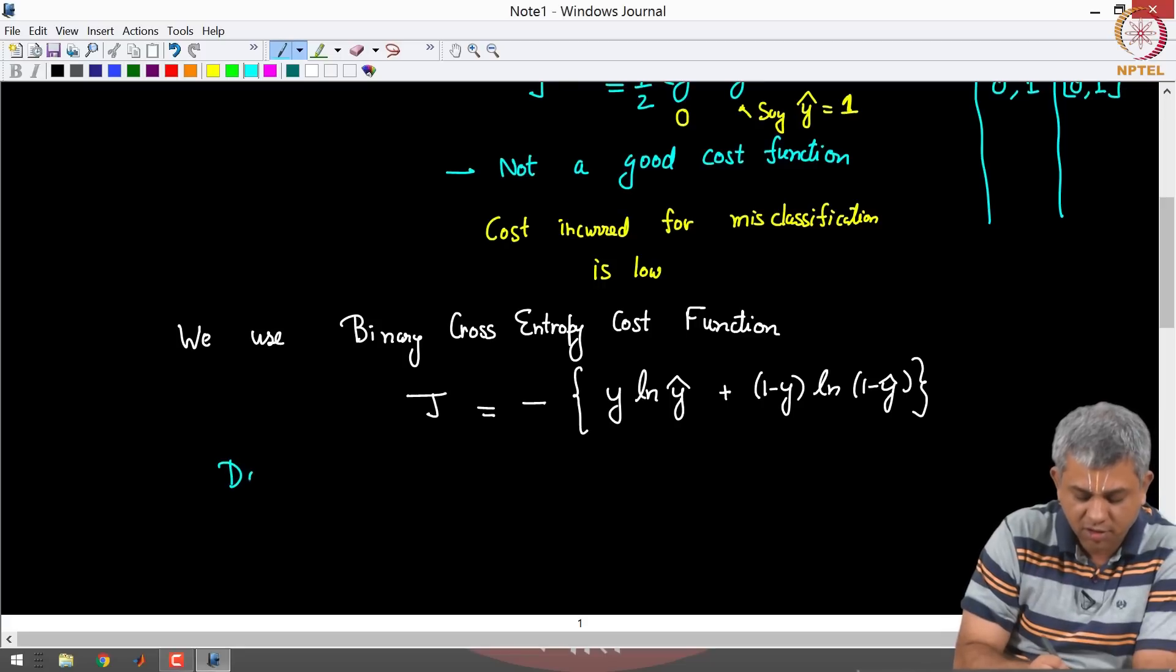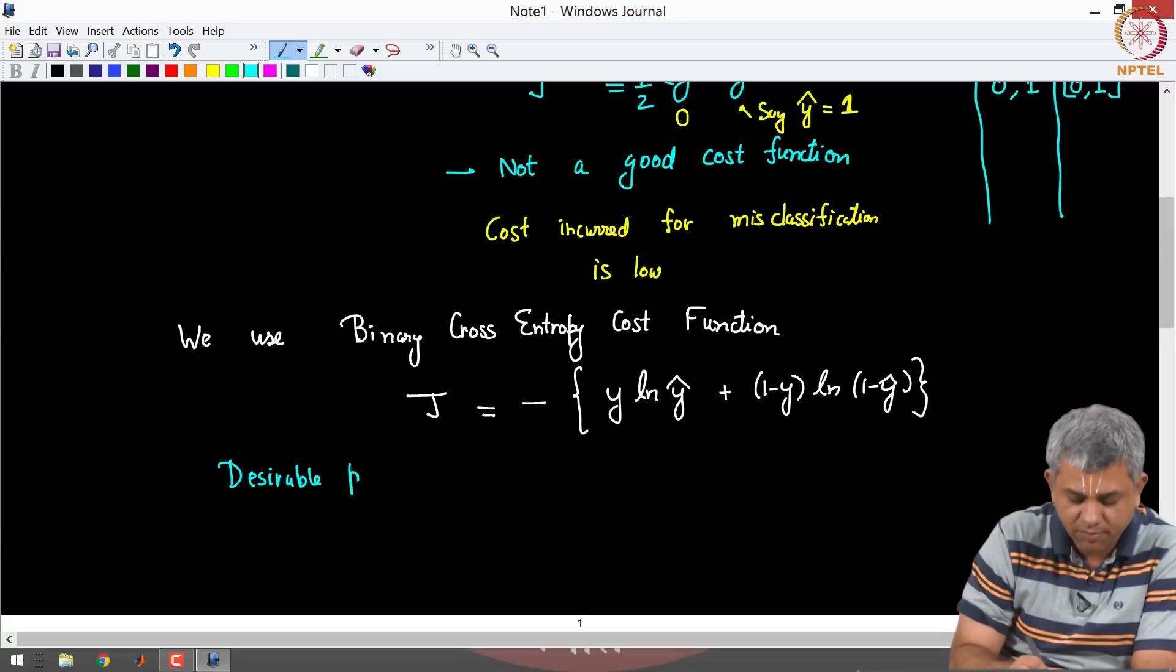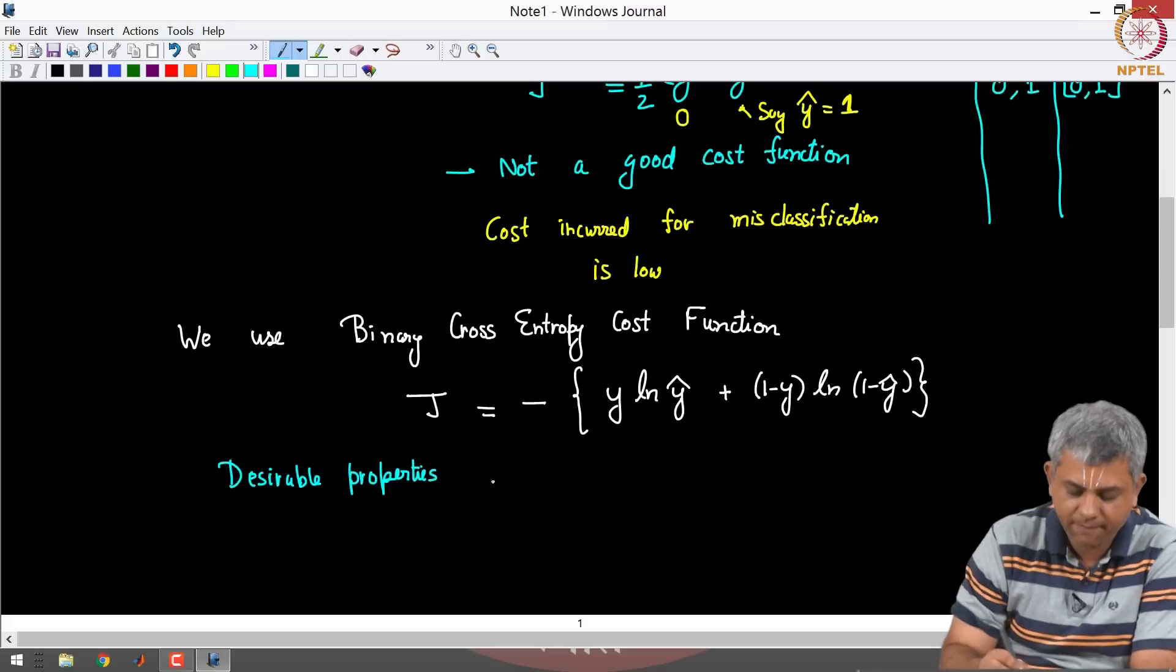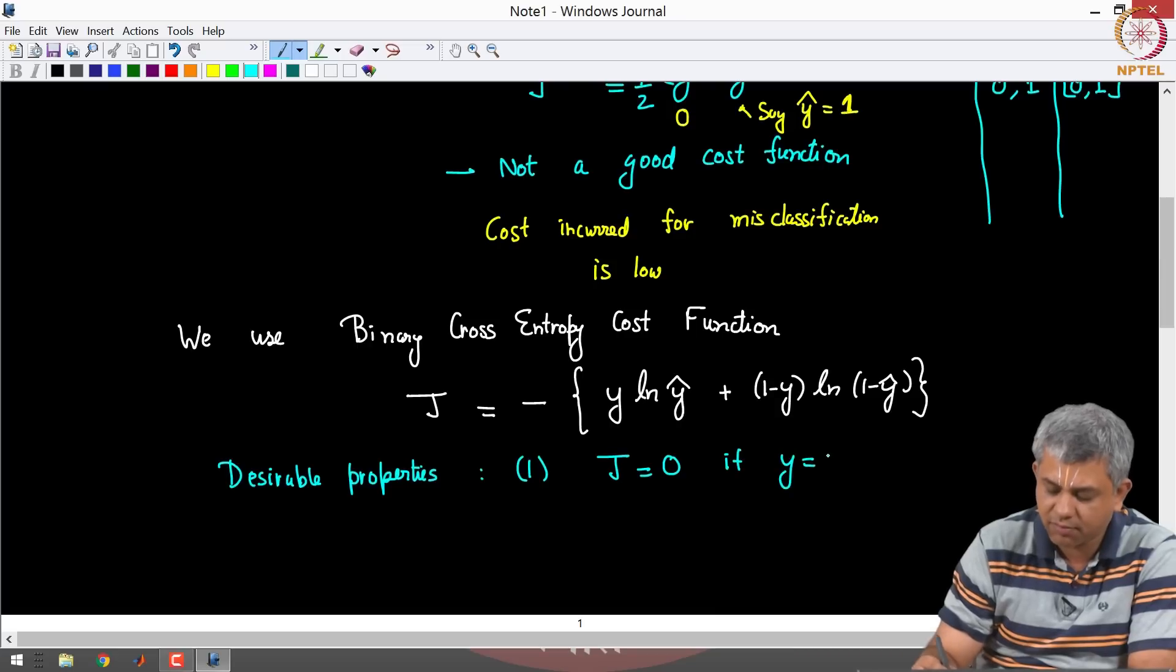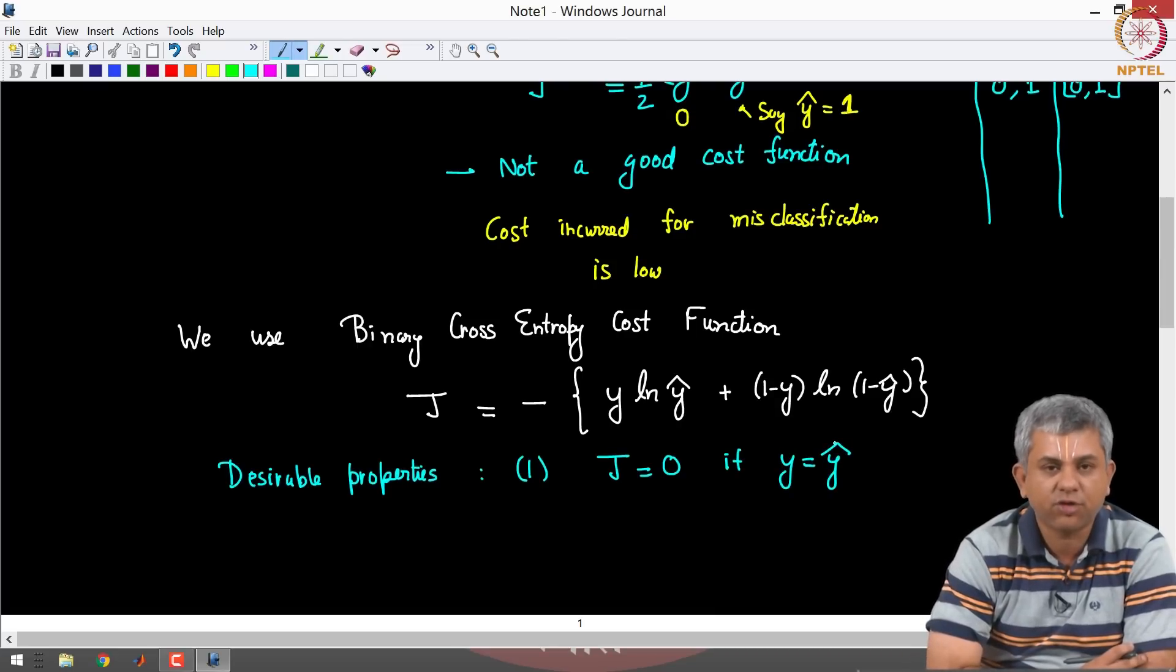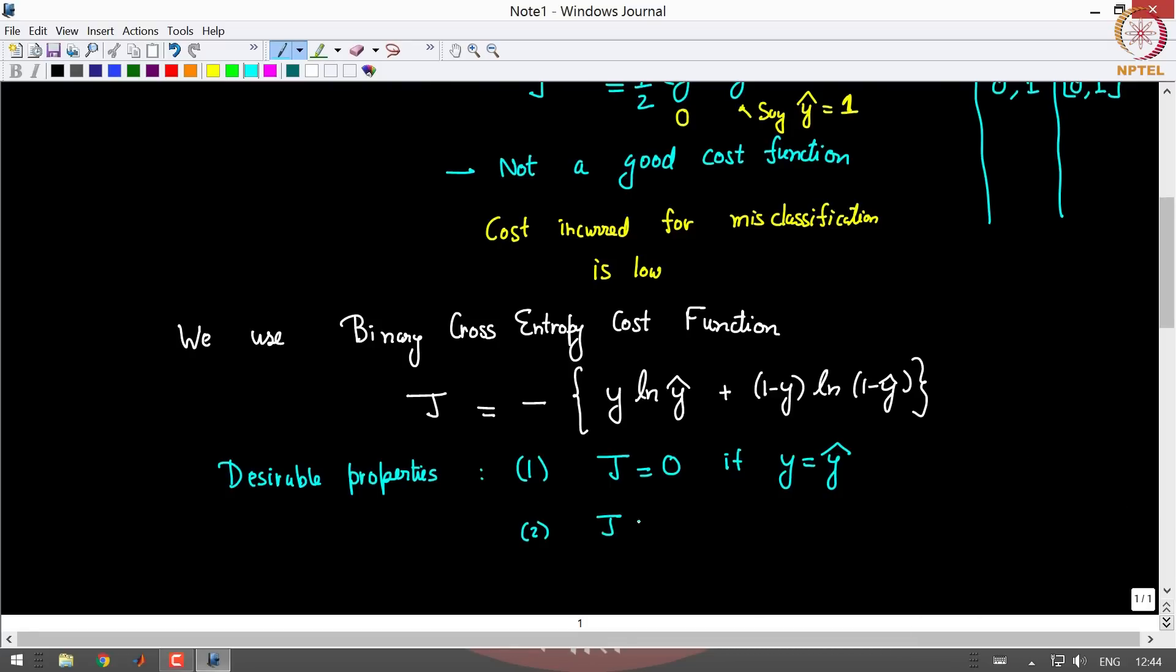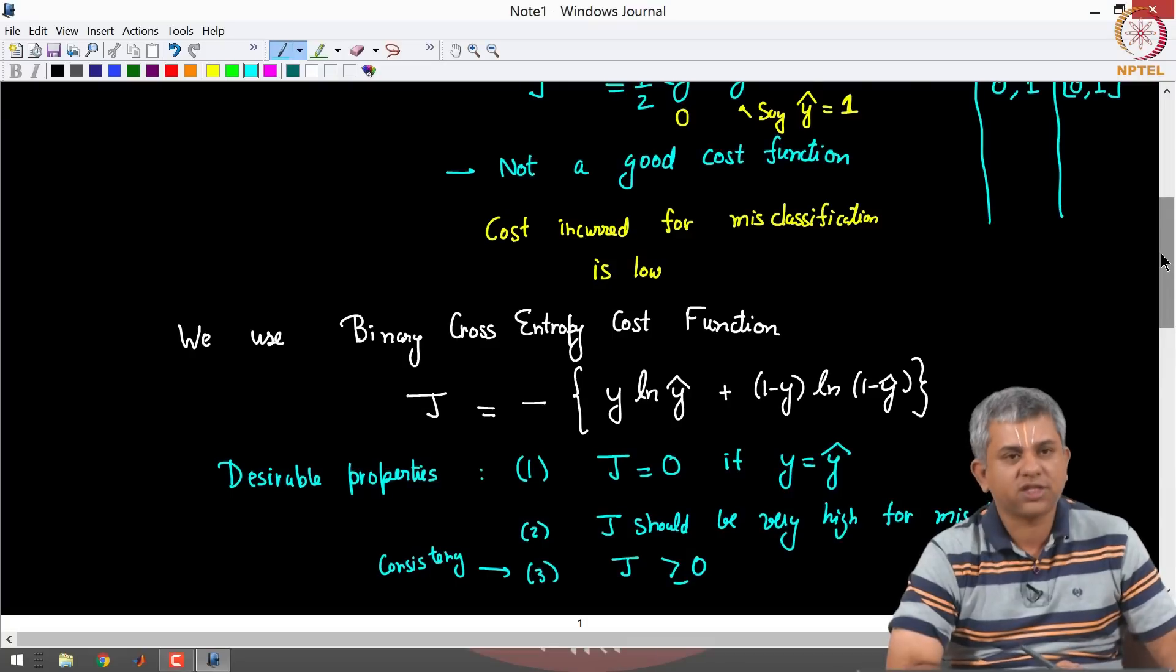So now let us think about some properties of the cost function that we want to have and let us check whether this has it or not. Some desirable properties for a classification cost function: First of course is J should be 0 if Y is equal to Y hat. This is the first thing that we have to check. Second, J should be very high for misclassification. And the third, this is merely required for consistency, is that J should be greater than equal to 0. Remember when we had our least square cost function, least square is obviously always positive. So let us check this step by step.